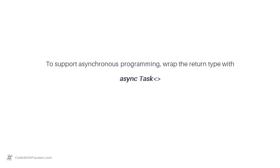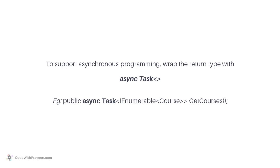When it comes to Web API controllers, to support async, wrap the return type with async and Task keywords. This signals ASP.NET that this action will return the result asynchronously, applying the relevant behavior for that action method. For example, the GetCourses method in the course controller can be converted by adding the keywords async followed by Task for the return type IEnumerable of Course, showing that GetCourses will return a collection of courses asynchronously.